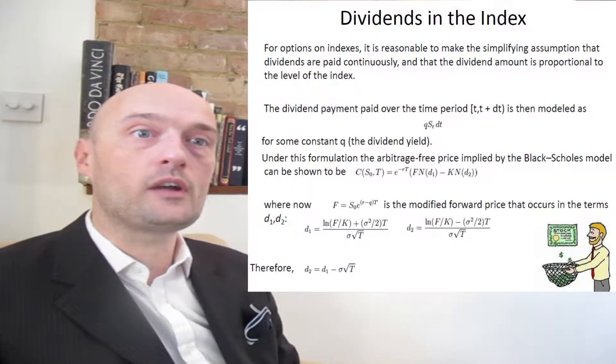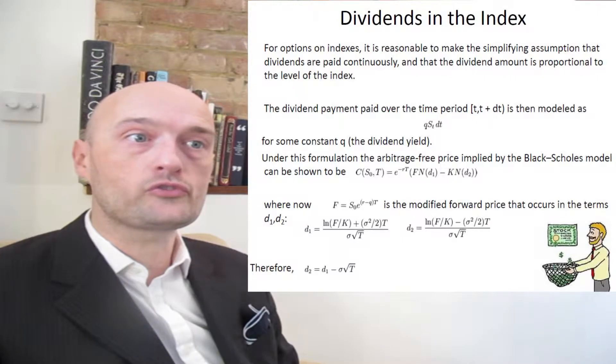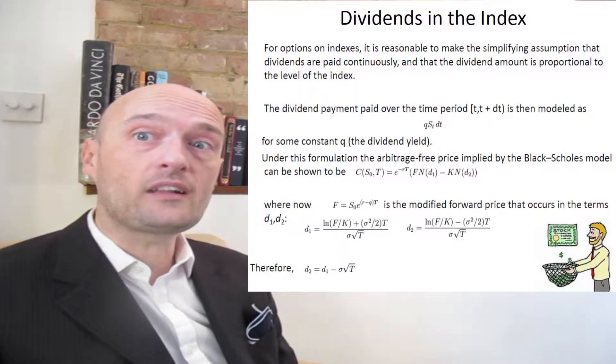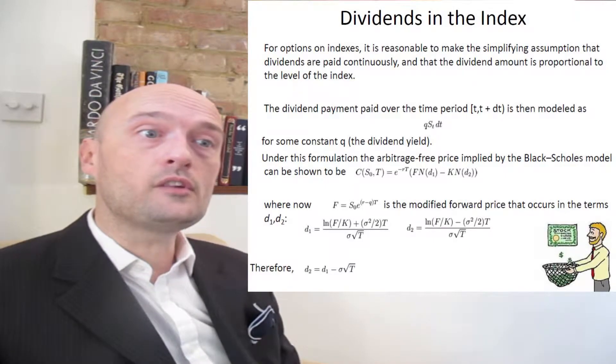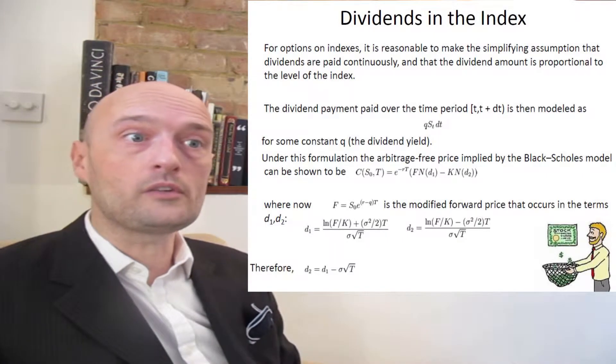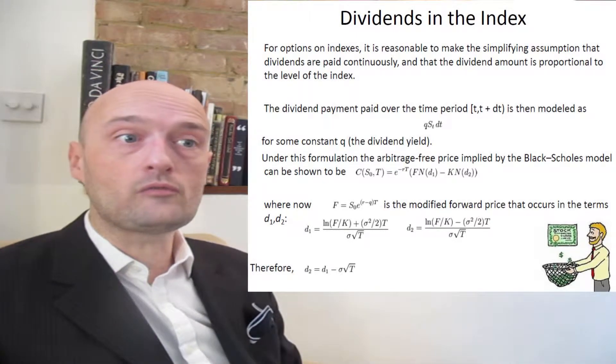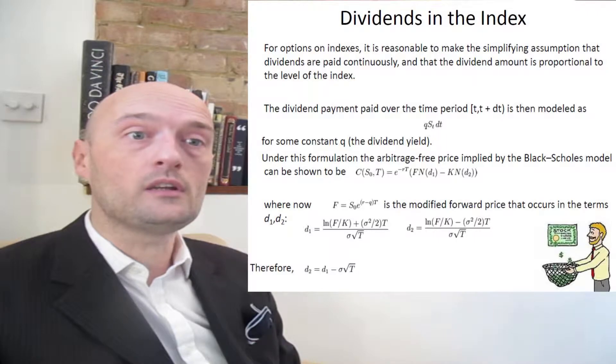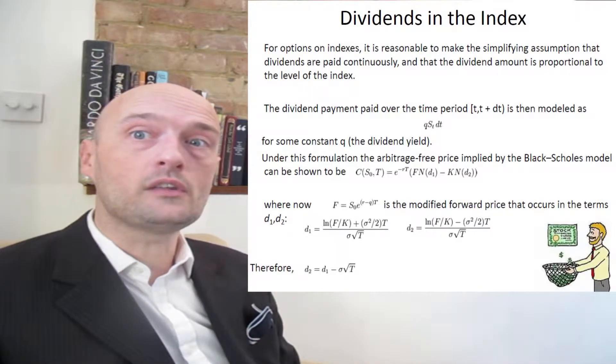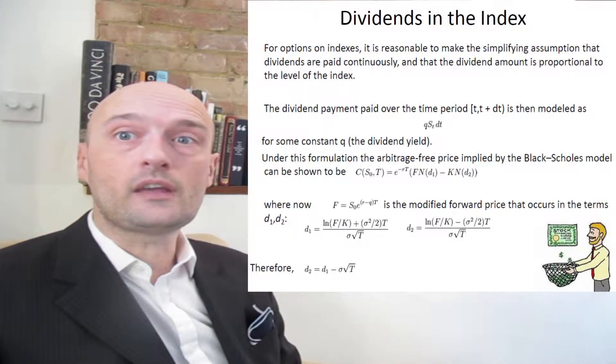For options on indexes, it's reasonable to make the simplifying assumption that dividends are paid continuously and that the dividend amount is proportional to the level of the index. Essentially, we calculate a dividend yield. The dividend payment paid over the time period is modeled using the formula you see on the screen, and then for some constant q, which is the dividend yield, we're able to use the formula that you see on the screen right now. It's just a modified Black-Scholes formula to price options on an index.